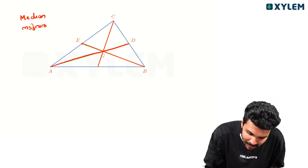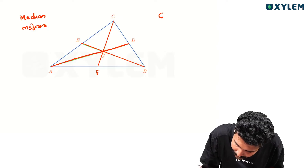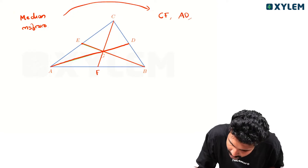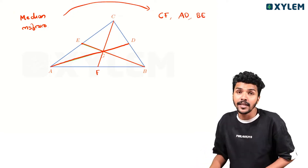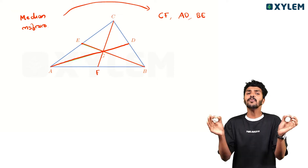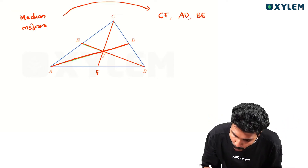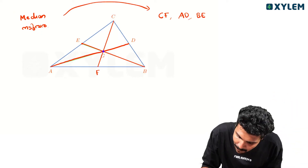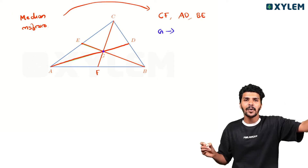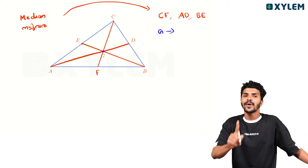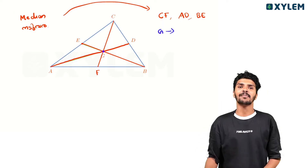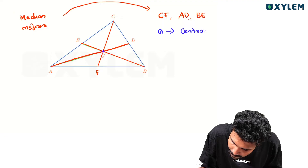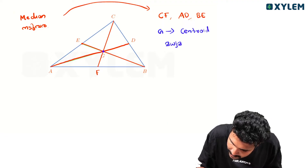Here are three medians: CF, AD, and BE. These three medians meet at one point, G. That point G is the centroid. The name is centroid — in Malayalam, it is called Madhyama Kendra.